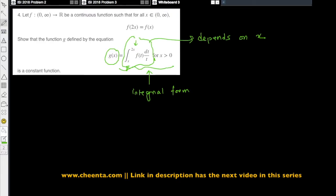Anything whose value depends on x is by default a function of x. And we want to show that the function g of x is a constant function.